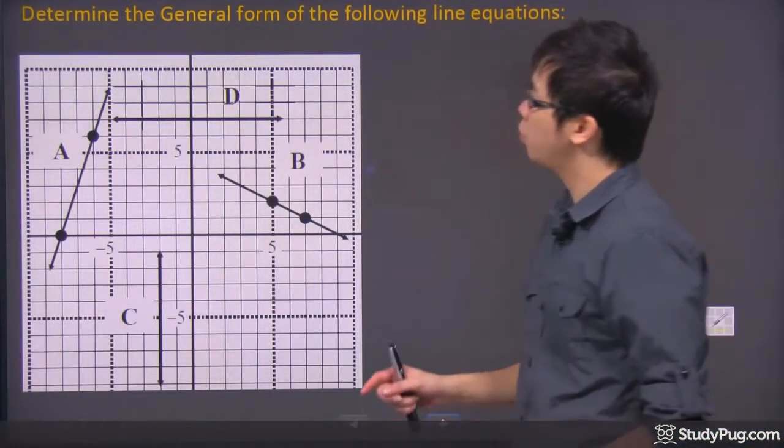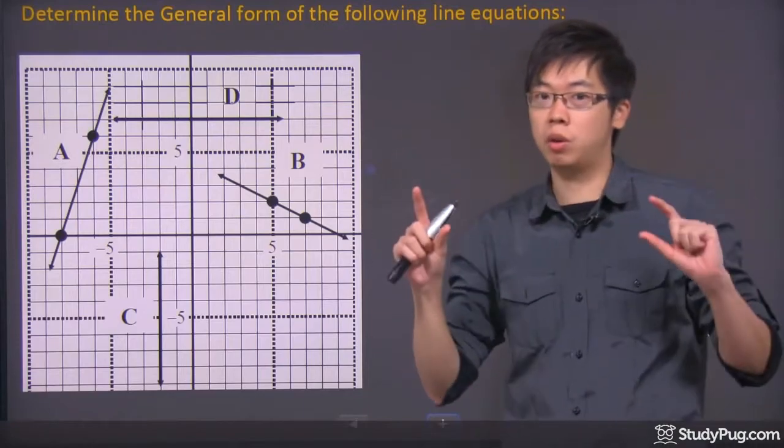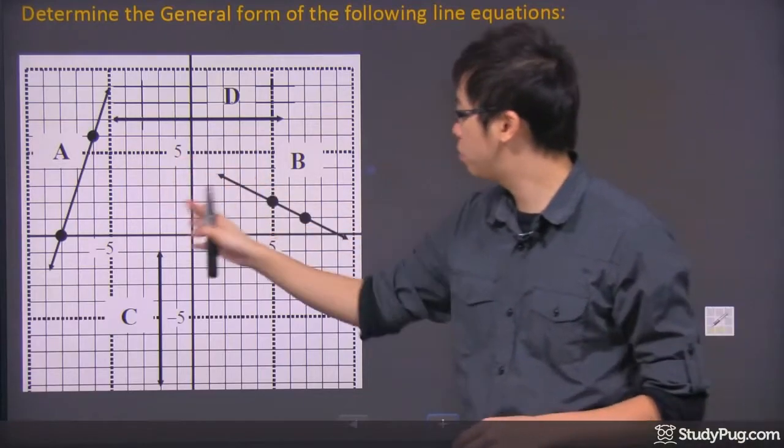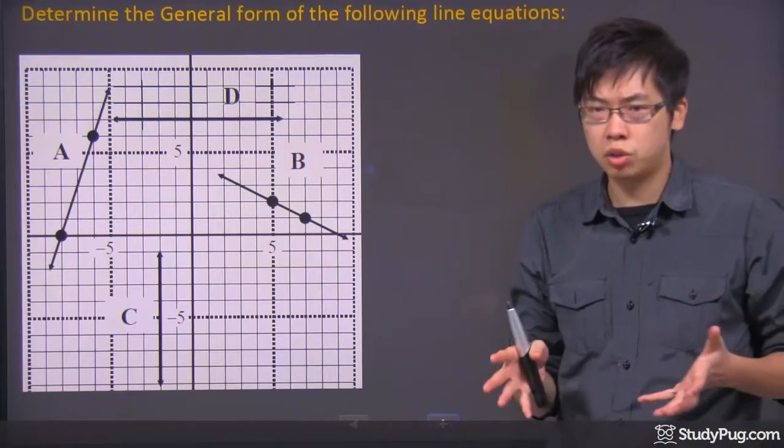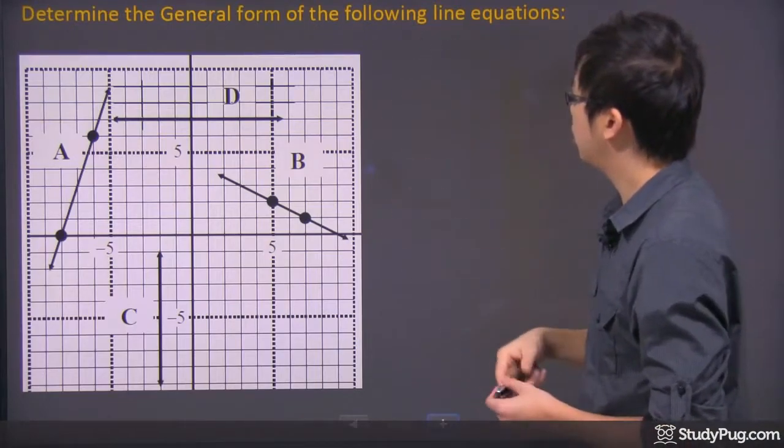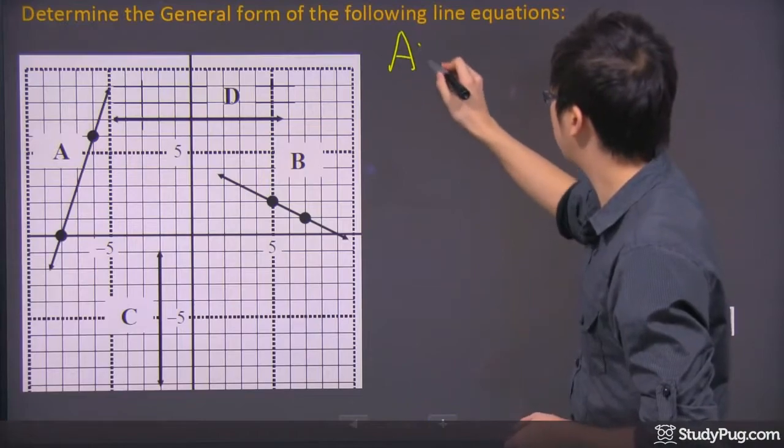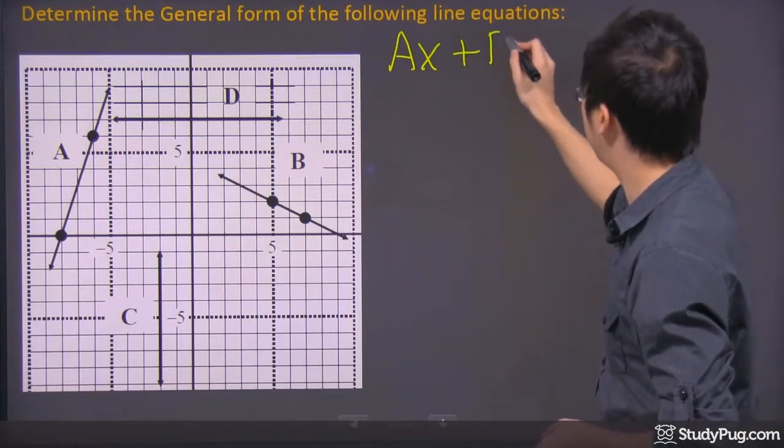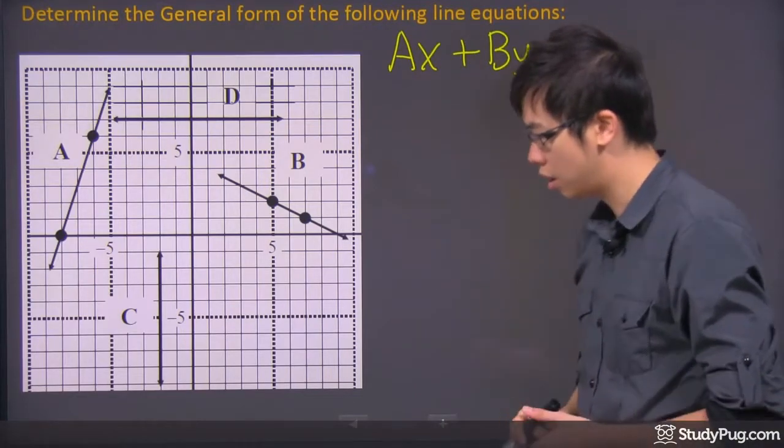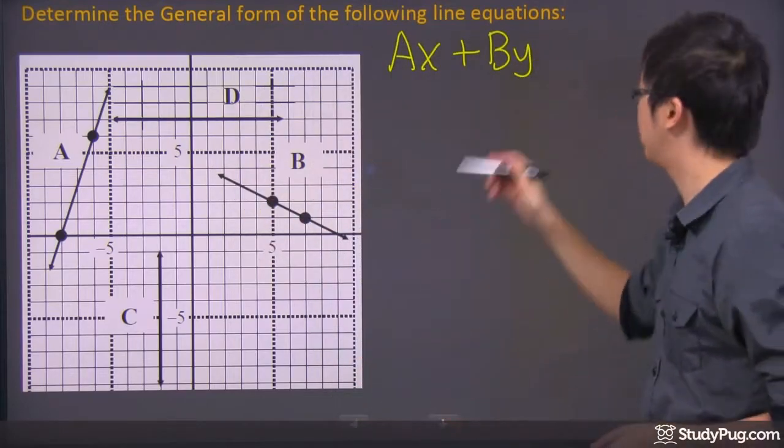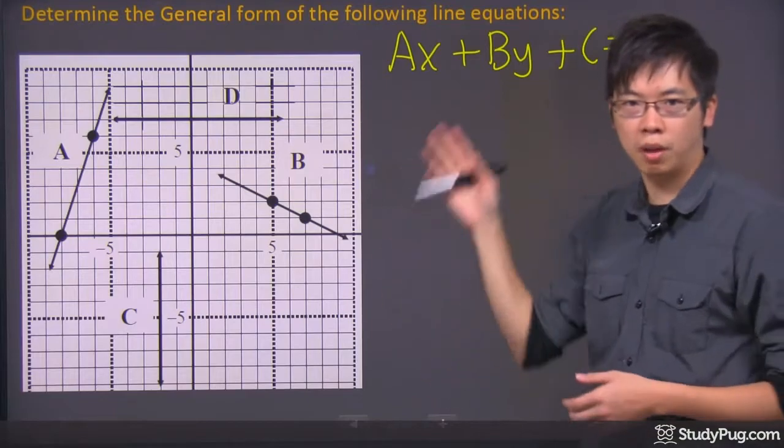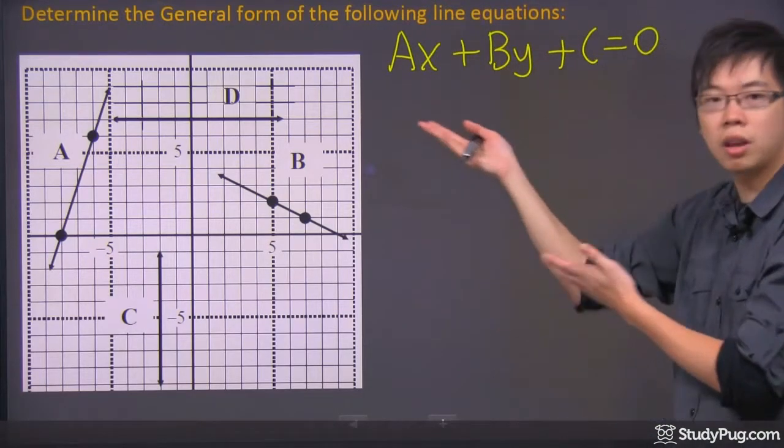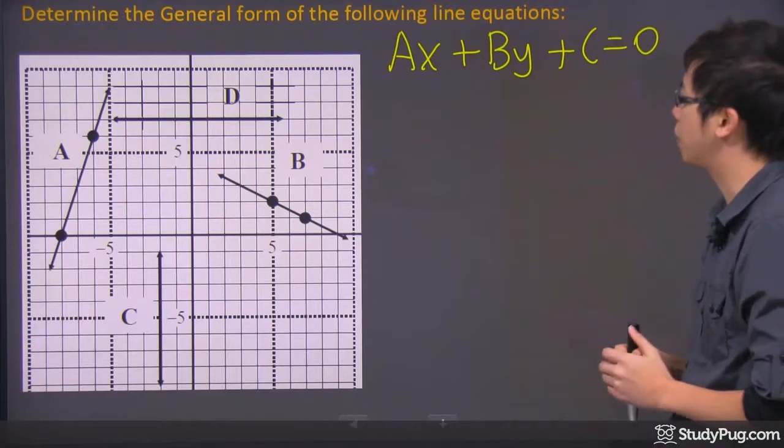Hi, welcome to this question right here. We're here to determine the general equation of all these lines A, B, C, and D. So the idea is, what is the general equation? In this case, we're going to do the AX plus the BY, and we're going to use the plus C on this side. It depends—some textbooks have the C on this side, some have it on the other side. But in this case, let's use this way.